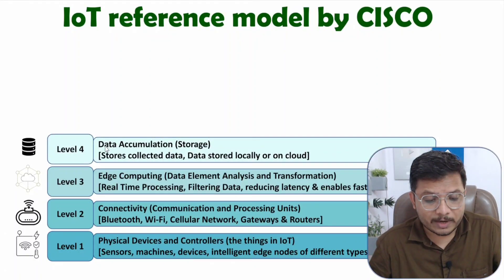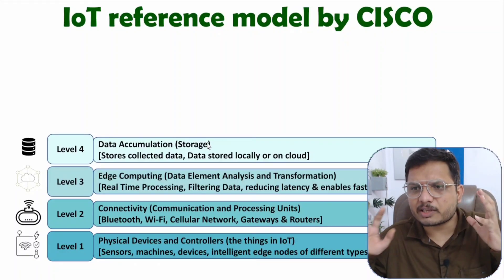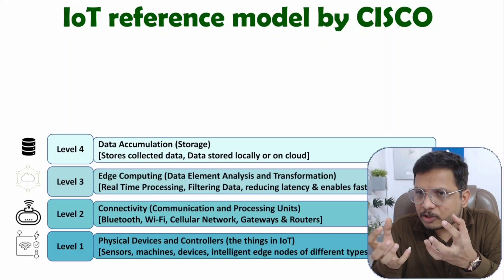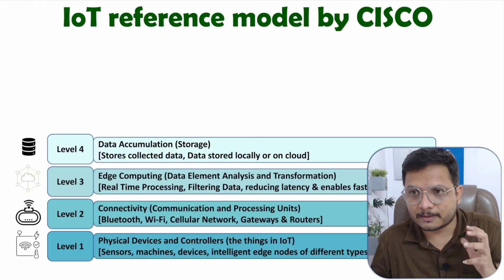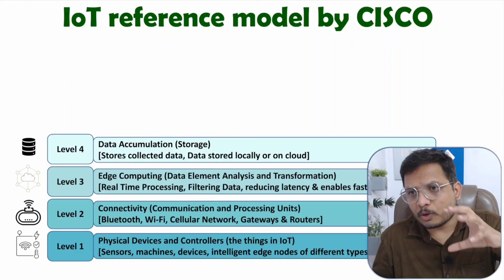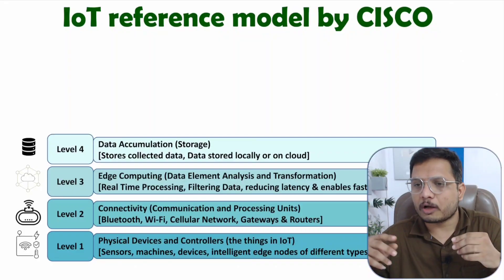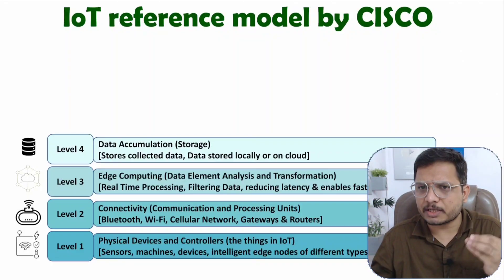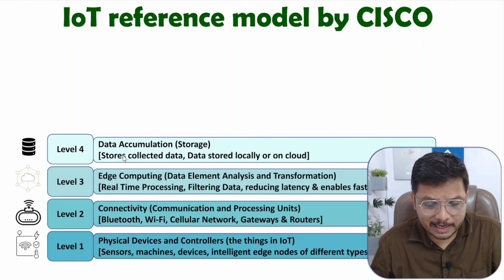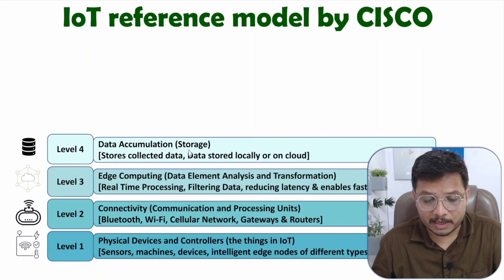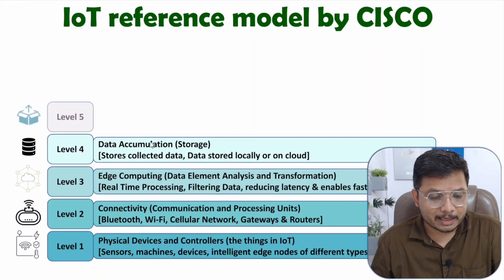Level four is data accumulation, which refers to storage. Here we store large amounts of data sensed by sensors. That storage can be local or on the cloud — for some applications data is stored locally, for others it is stored on the cloud.